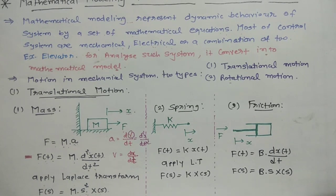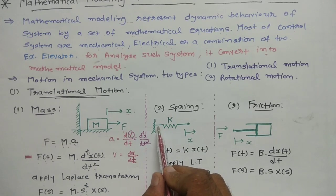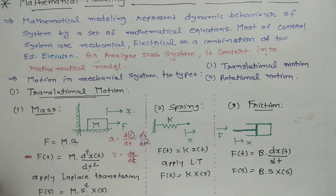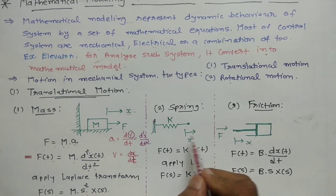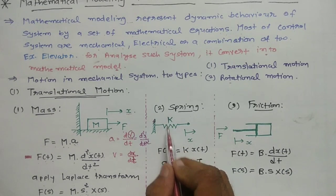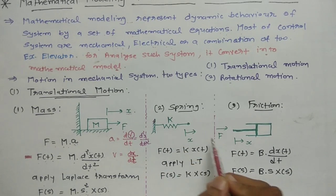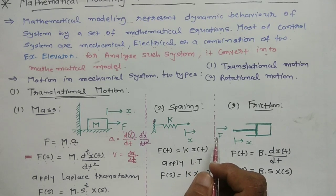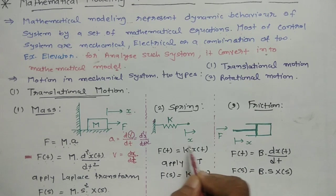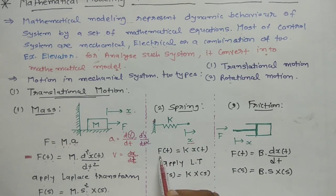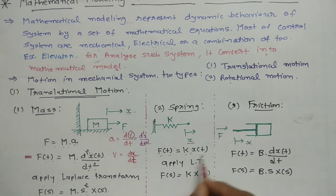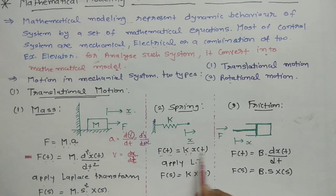Now we discuss the spring element. For a spring, when a force is applied, the force is equal to the spring constant K multiplied by the displacement x(t). So: F(t) = K · x(t).